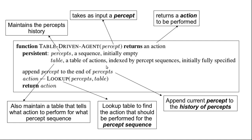Based on the percept sequence obtained, we look up that percept sequence in the table, and from the table we find out what action needs to be performed for that sequence. The lookup function returns the action, which is then determined from the table. That particular action is returned and performed by the actuators. This is the pseudocode for the table-driven agent.